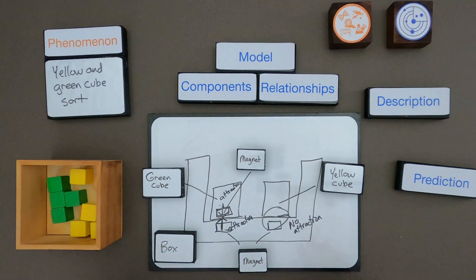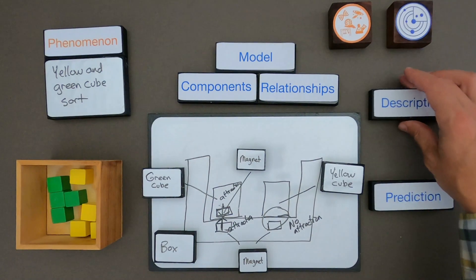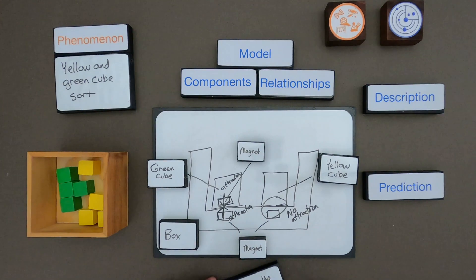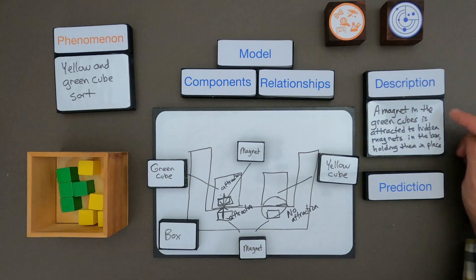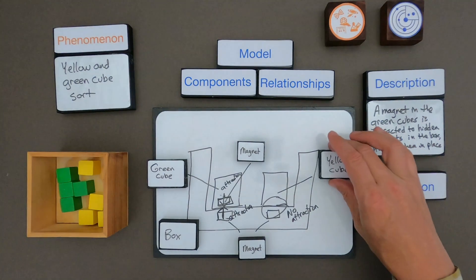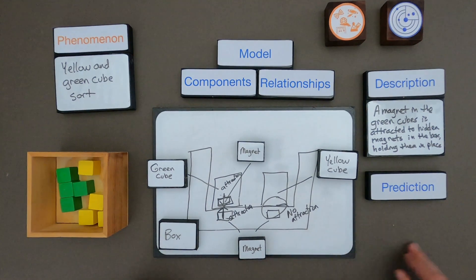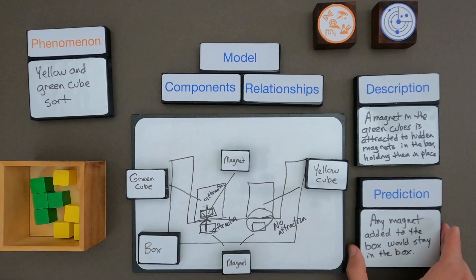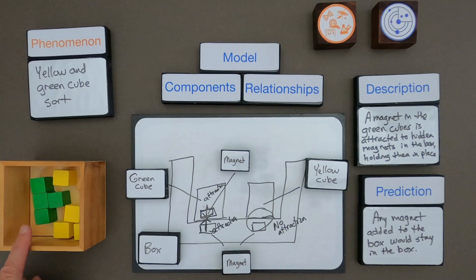Now that I have the big parts of the model I have to write a description: a magnet in the green cubes is attracted to hidden magnets in the box, holding them in place. The last thing I have to do is make a prediction if my model is correct. My prediction is that if you were to add any magnet to the box — not just those found in the green cube — it would be attracted to those magnets and stay in the box.